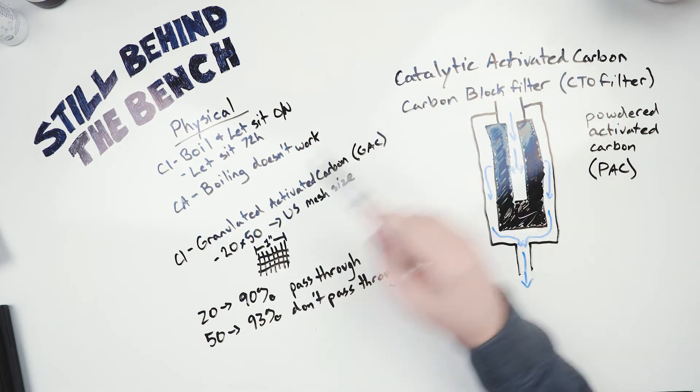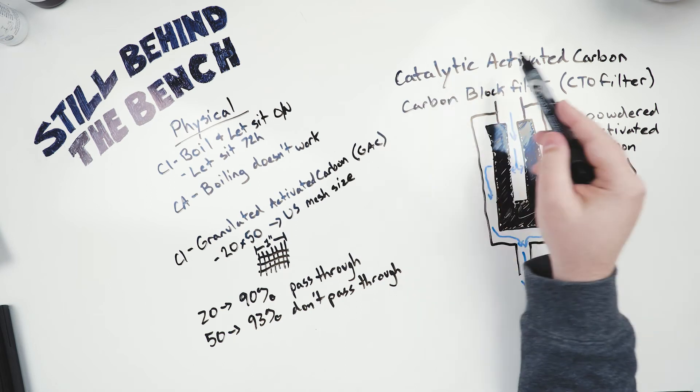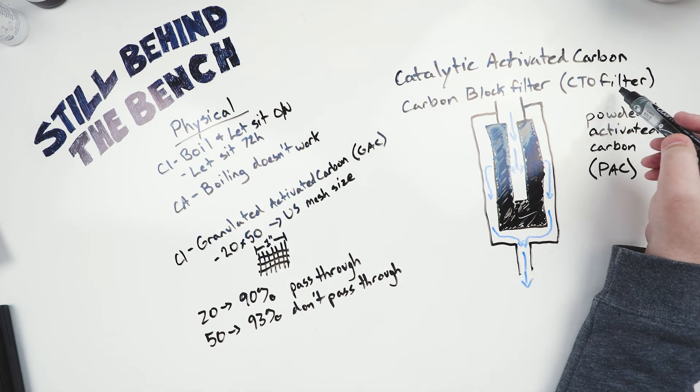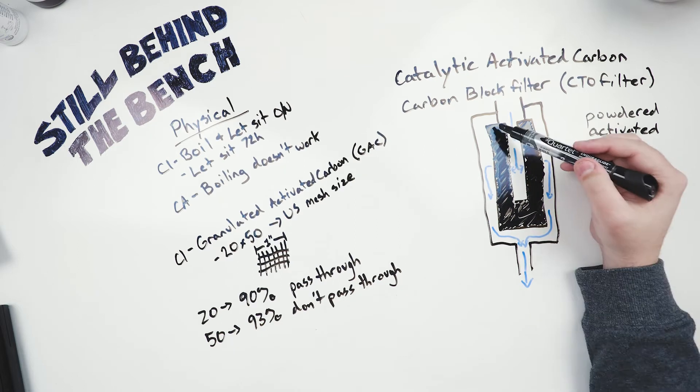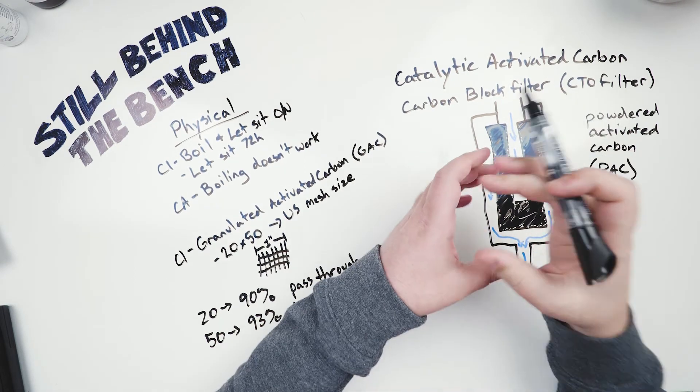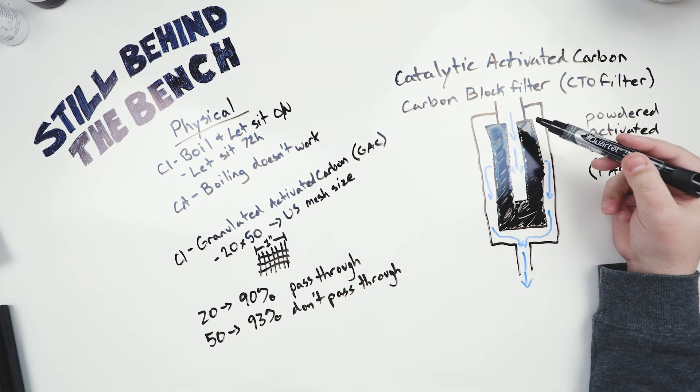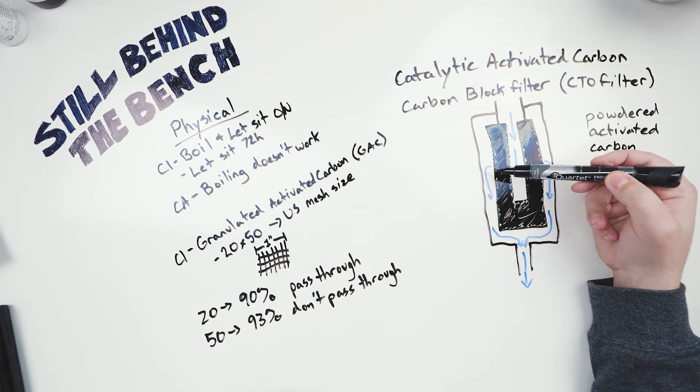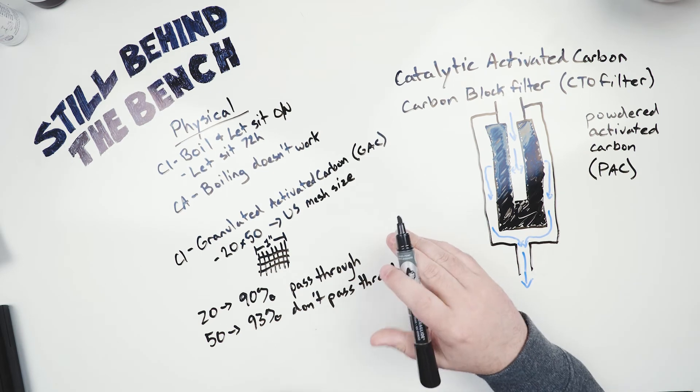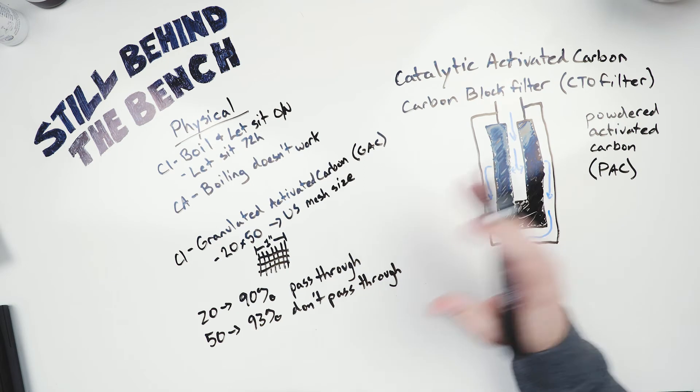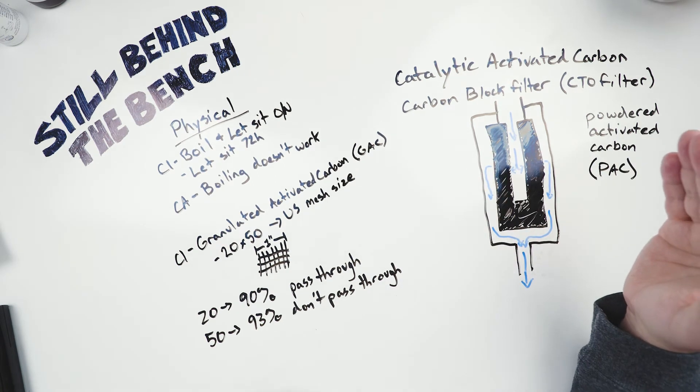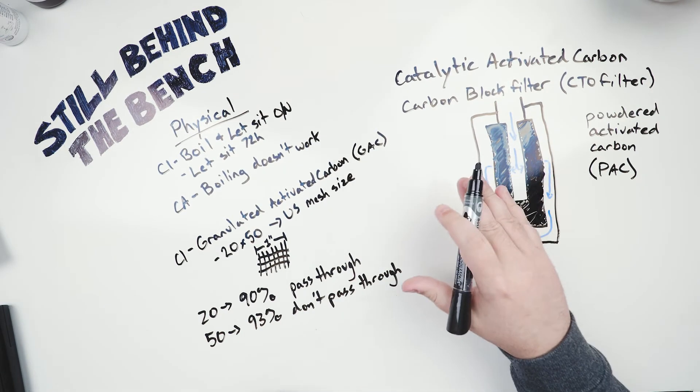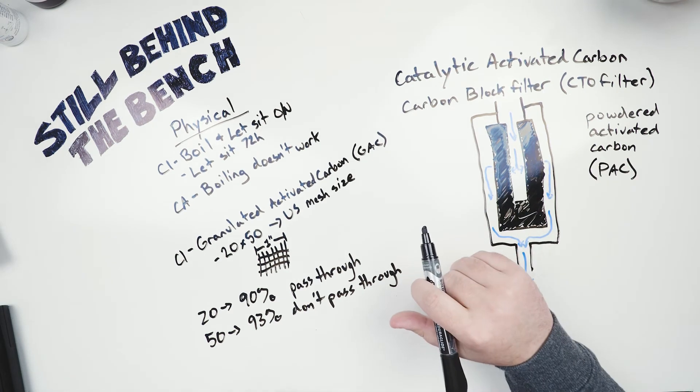Another thing you can do is just skip granular activated carbon or granular catalytic activated carbon altogether and move to the vastly superior carbon block filters also known as a CTO filter. Essentially what they've done is they've taken a powdered activated carbon they've compressed it into a cylinder shaped with a hole in it and then they put it in a filter housing sort of like a reverse osmosis. Pump the water in under pressure it passes through the wall of this carbon block and then it comes out the output and it'll remove essentially all the chlorine or chloramine and quite a few other compounds that you'll find in water at essentially any value you'll ever see. And these are really the only two physical ways that you can remove chlorine or chloramines. Now we can get on to the chemical methods.